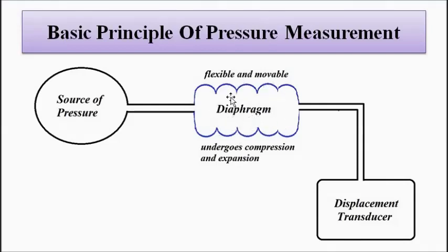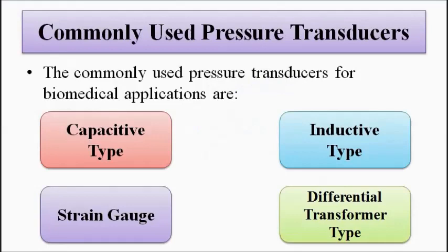So the displacement is dependent on the compression and expansion of the diaphragm, and the compression and expansion of diaphragm is dependent on the fluctuation of pressure. So the displacement is indirectly related to pressure fluctuations.